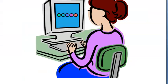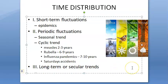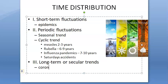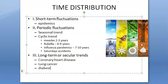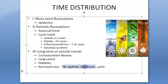Long-term or secular trend implies a change in the occurrence of a disease over a long period of time — several years or decades. Examples include coronary heart disease, lung cancer, and diabetes, which are increasing. On the other hand, TB, typhoid, diphtheria, and polio are showing a decline. People now have more non-communicable diseases than communicable diseases.